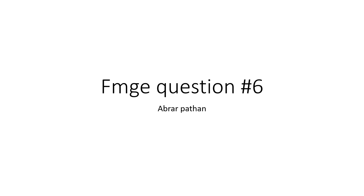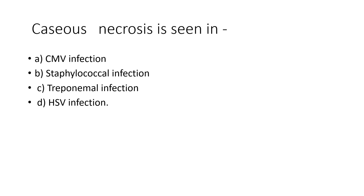We are back with another video for FMG questions. KS necrosis is seen in: option A, CMV infection; option B, staphylococcal infection; option C, treponemal infection; option D, HSV infection. So pause and guess the answer.